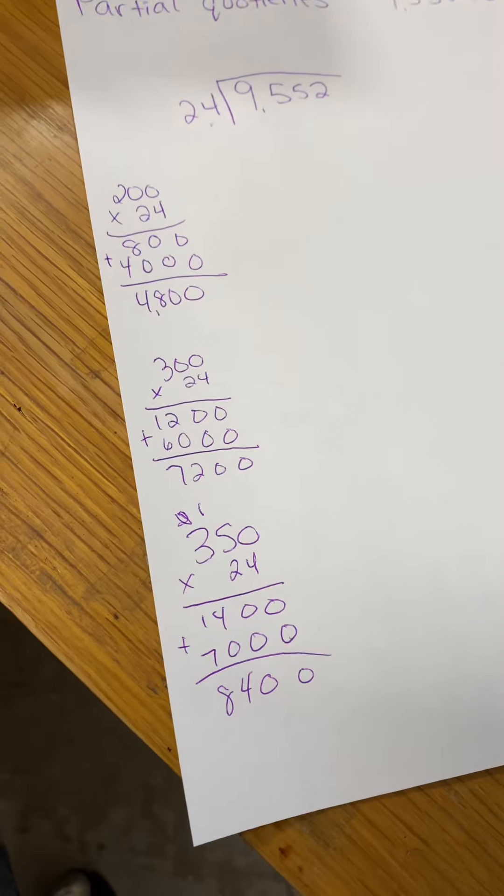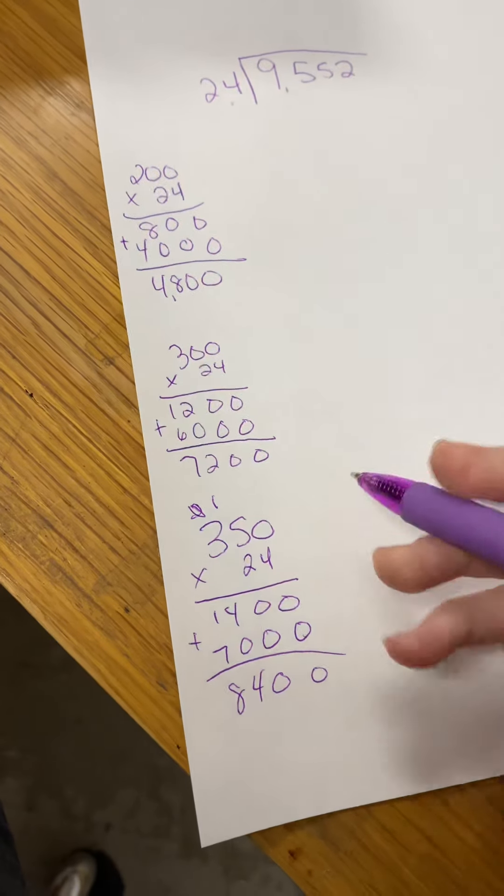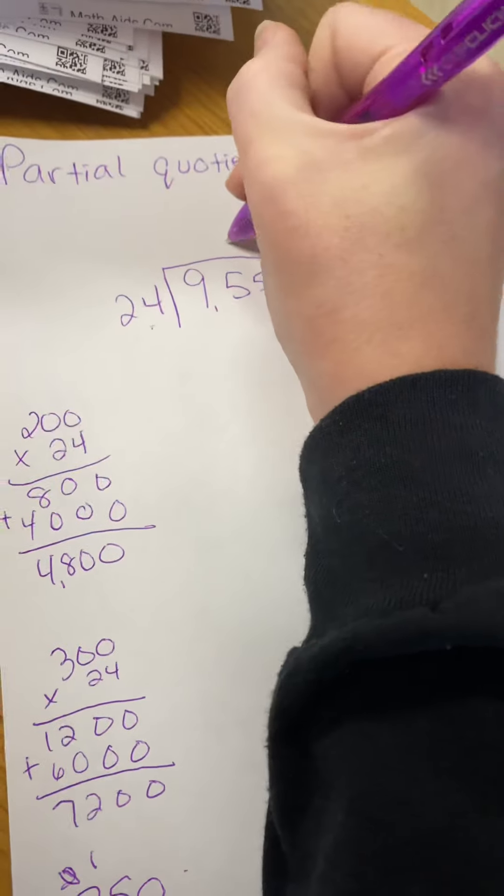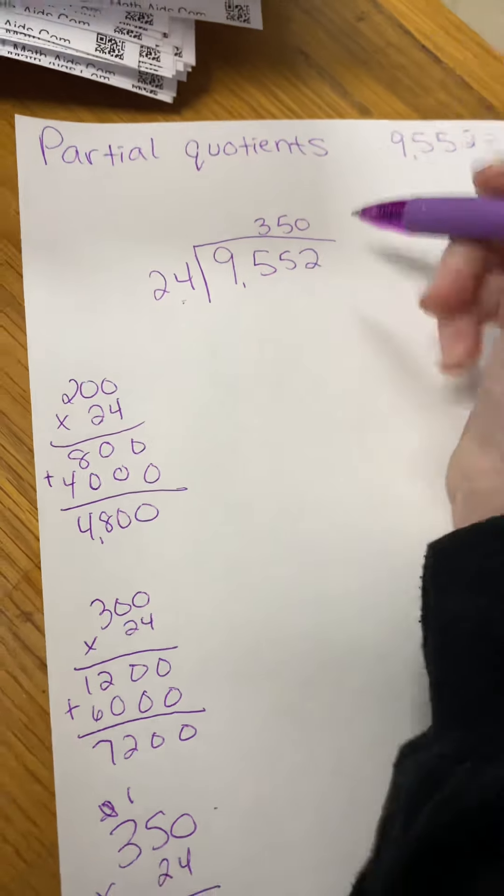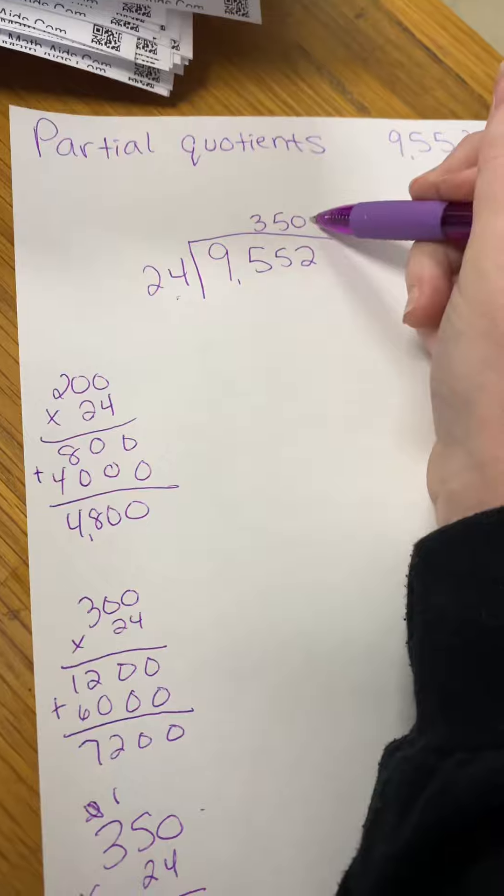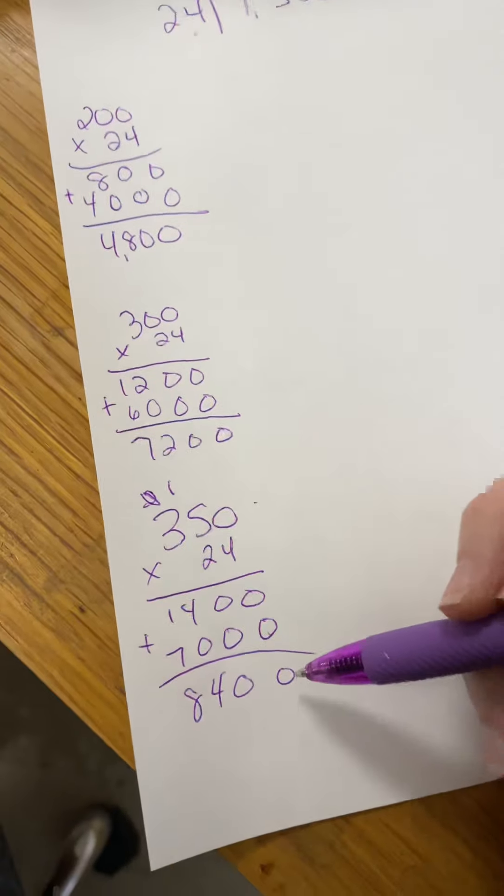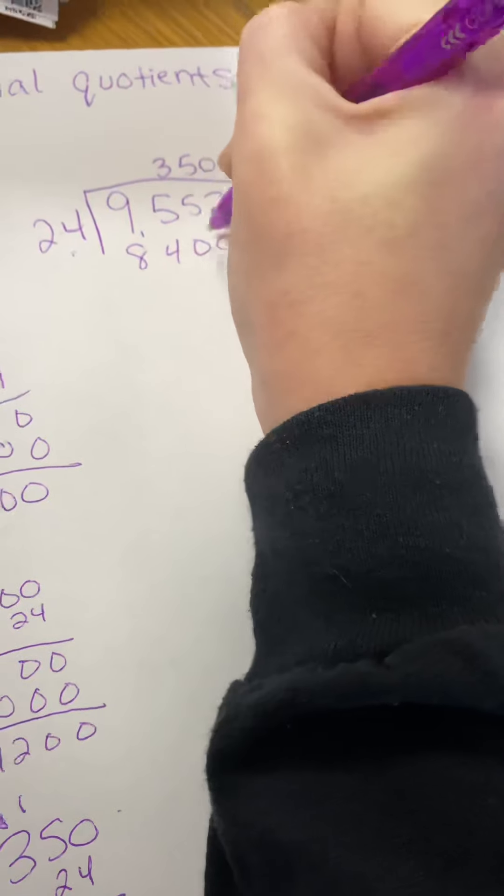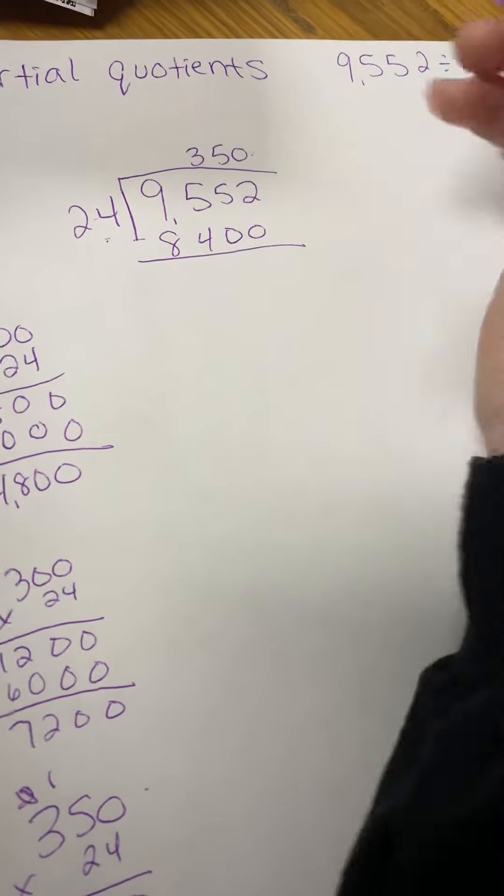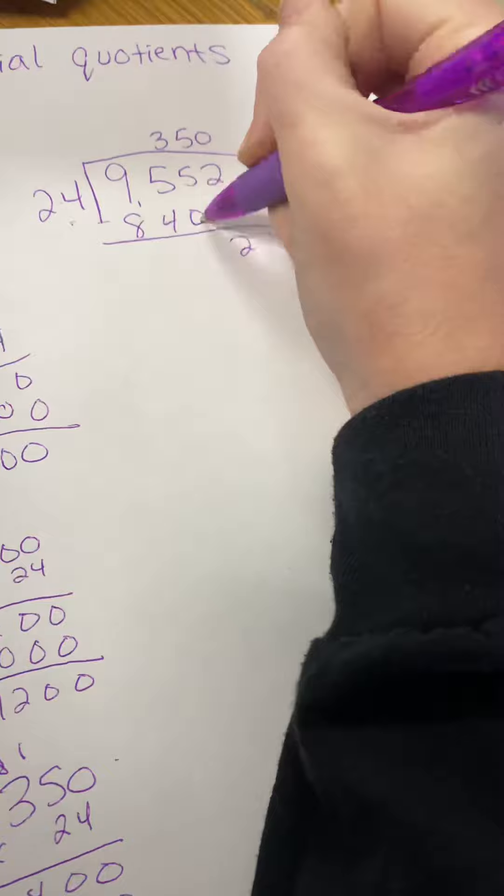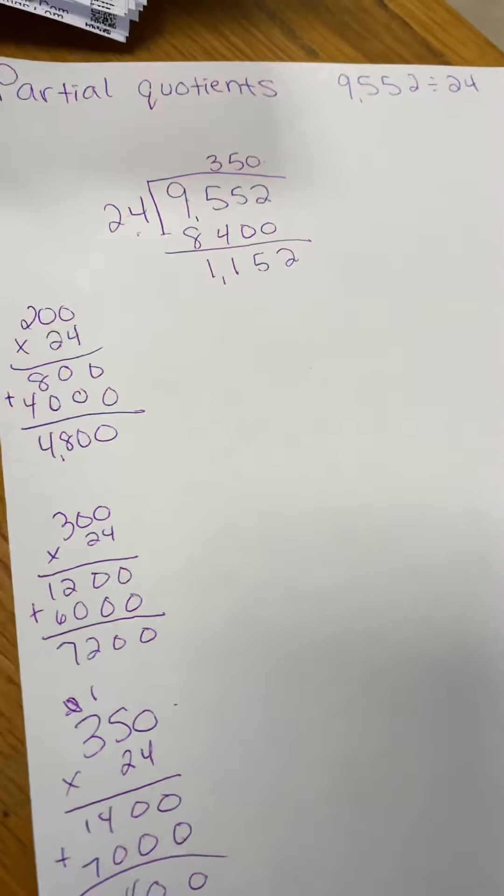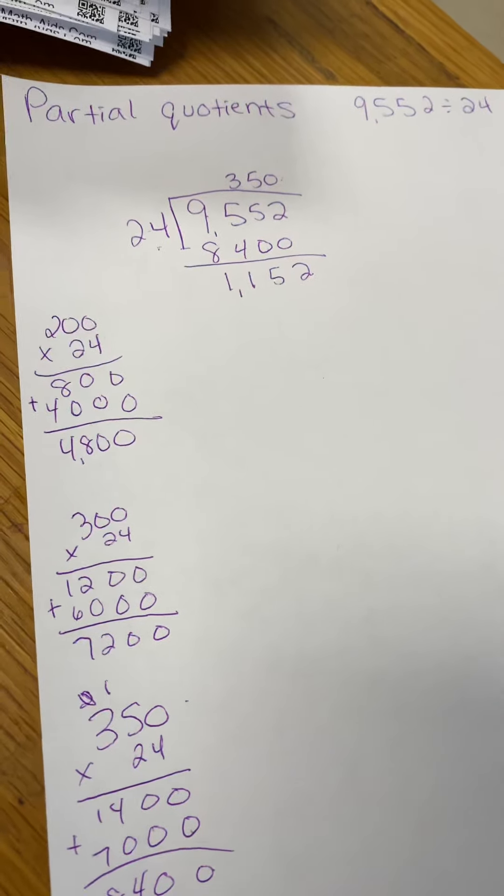I feel like that's pretty close, so we're just going to go ahead and use 350. You take your 350 and put it on top. This is your first partial quotient. 350 times 24, we found out, is 8,400. So you take your 8,400 and you subtract. 2 minus 0, 5 minus 0, 5 minus 4 is 1, 9 minus 8 is 1. You should get 1,152.